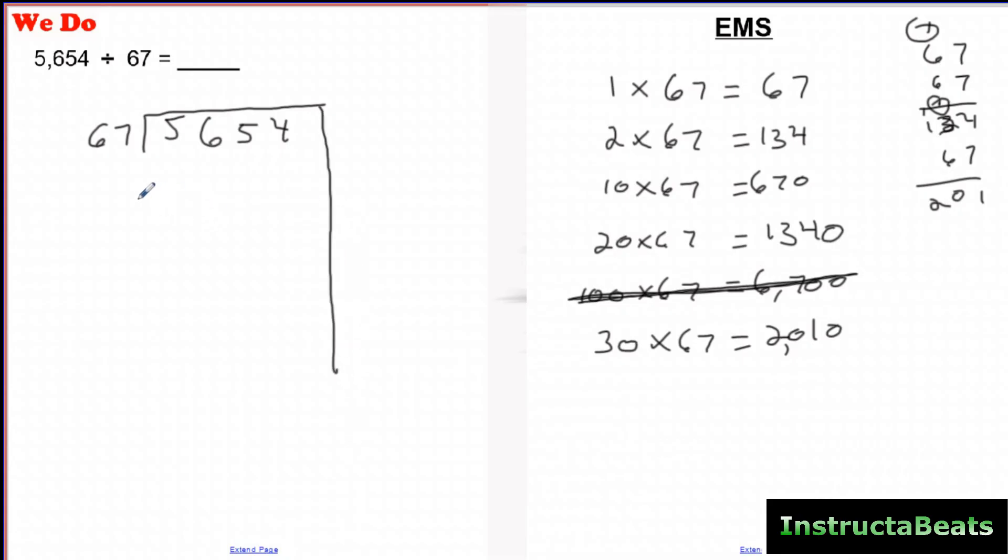So I'm going to go ahead and use that just because I'm using my easy multiple sheet. You could use something else if you wanted to. There's different ways to build your answer. So I'm going to go ahead and use 30 groups here. And when I multiplied 30 groups, that was 2010. Sorry, I forgot to put my steps right here. I'm going to subtract.